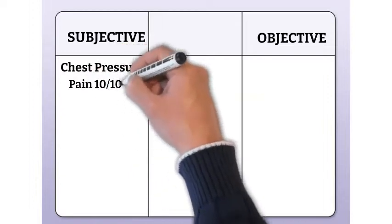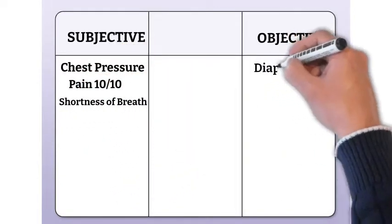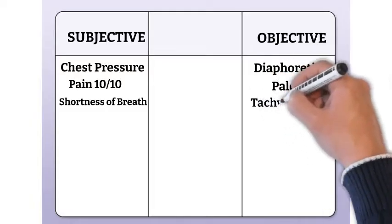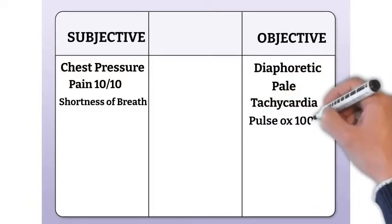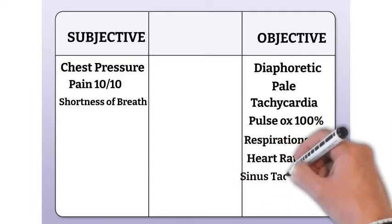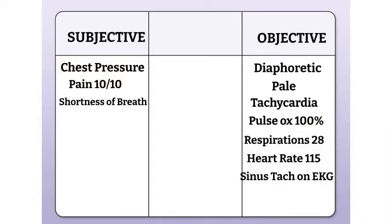So for our first situation, this is the way that our data breaks down. Under subjective, we have chest pressure, pain 10 out of 10, and shortness of breath. Under objective, we have diaphoretic, pale, tachycardia, pulse ox of 100%, respirations of 28, heart rate of 115, and sinus tachycardia on an EKG.